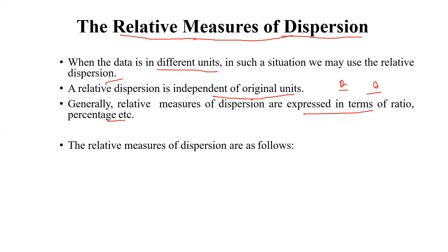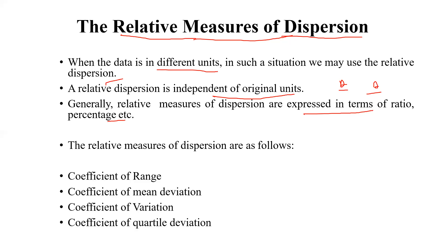The relative measures of dispersion are as follows — it is basically four types. The first one is the coefficient of range, the second one is known as the coefficient of mean deviation, the third one is the coefficient of variation, and the fourth one is the coefficient of quartile deviation.